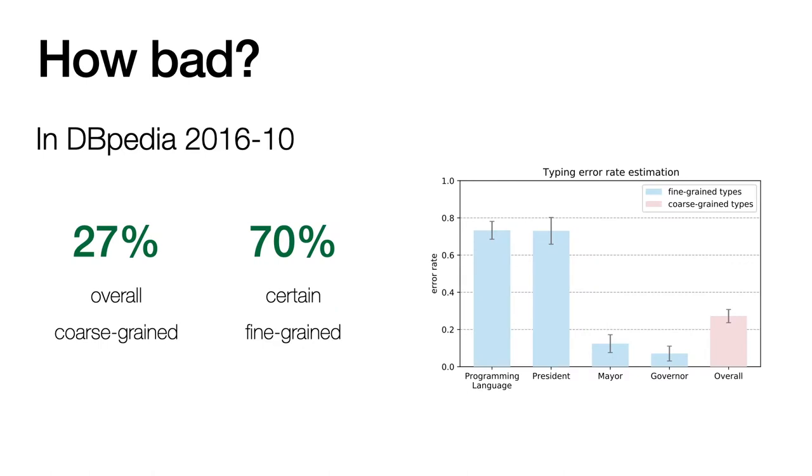So how bad are things? We did an estimation on DBpedia version 2016 October, and the results showed that, overall, around 27% of the coarse-grained types are incorrect, and for certain fine-grained types, the error rate could be as high as around 70%.